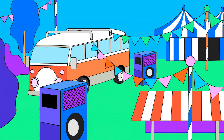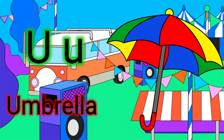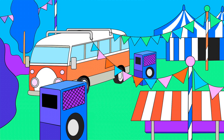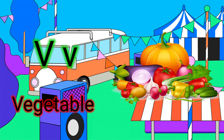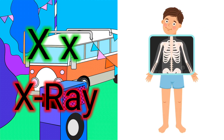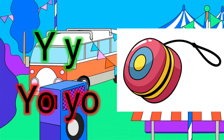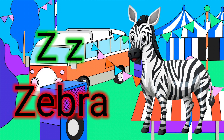U for umbrella, V for vegetable, W for watermelon, X for x-ray, Y for yo-yo, Z for zebra.